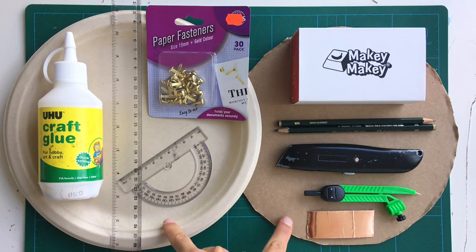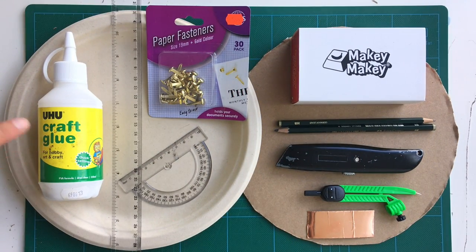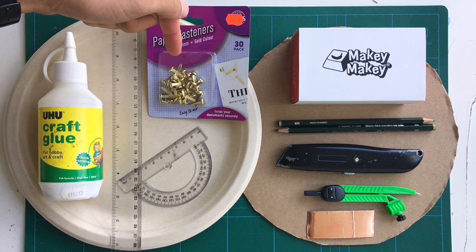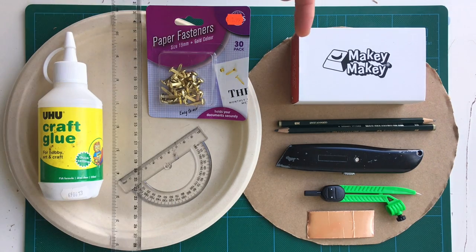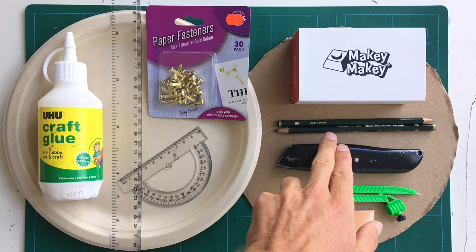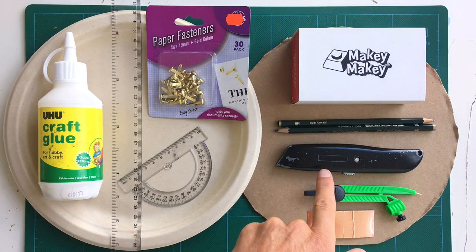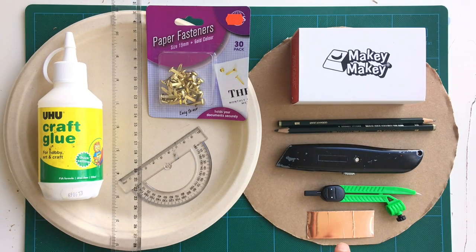But hey, let's go check out the materials that we'll need for this clock. Paper plate and some cardboard, craft glue, ruler, paper fasteners, a protractor, a Makey Makey invention kit, some graphite pencils, a box cutter, a compass, some copper tape.